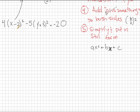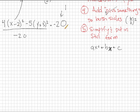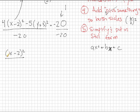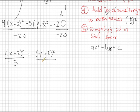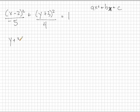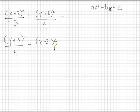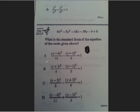So that is simplified. Now we have to put it in standard form. Standard form for conic sections requires a 1 on the right-hand side, so let's divide both sides by negative 20. That gives X minus 2 squared over negative 5, plus Y plus 3 squared over positive 4, equals 1. Rearranging, we get Y plus 3 squared over 4 minus X minus 2 squared over 5 equals 1. And I believe that is answer choice B, so the correct answer is B.